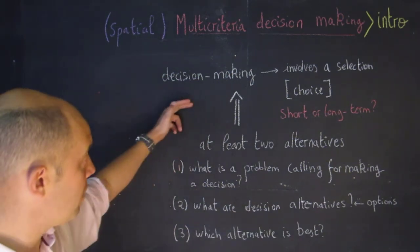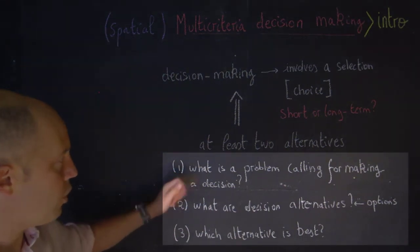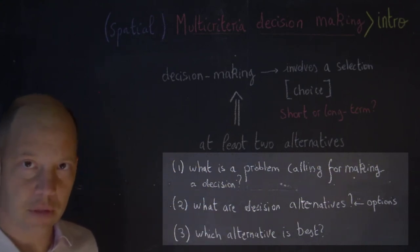A decision-making problem can really be thought of in three different components. The first one is what is a problem calling for making a decision. The second is what are decision alternatives and what are my options.